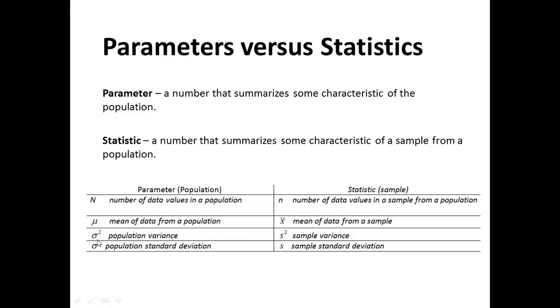Sigma squared represents the population variance, s squared the sample variance, sigma the population standard deviation, and s the sample standard deviation.